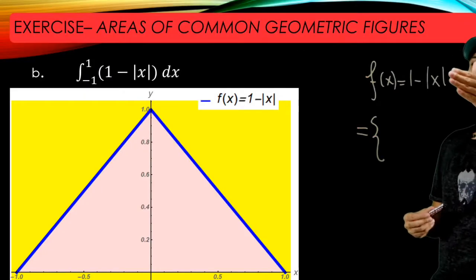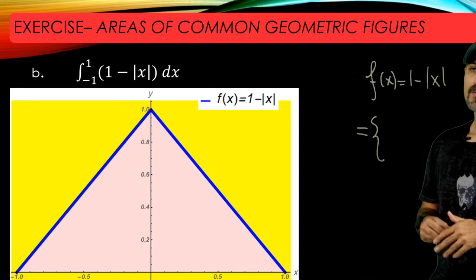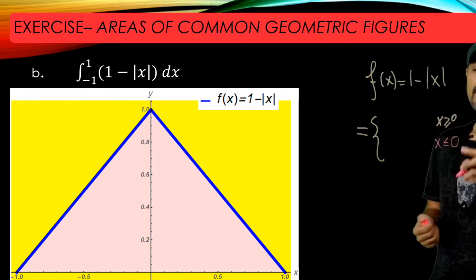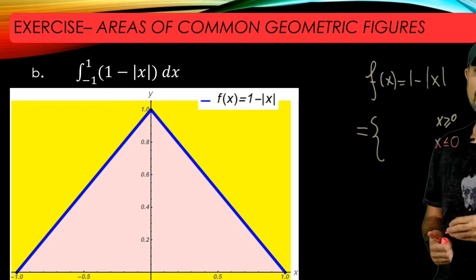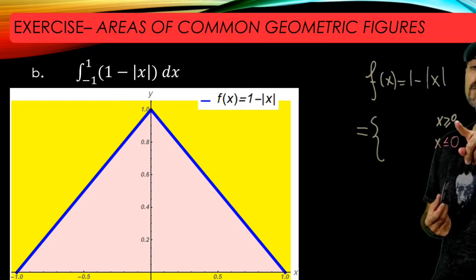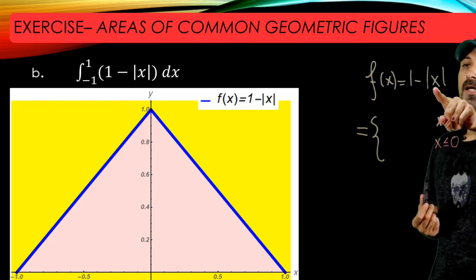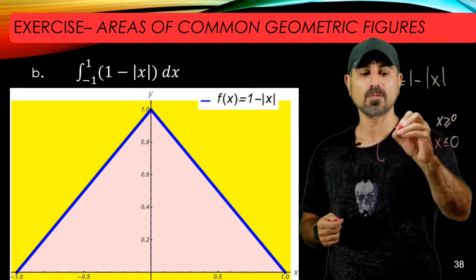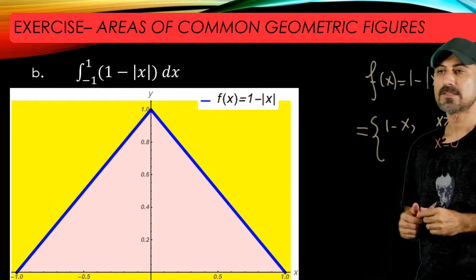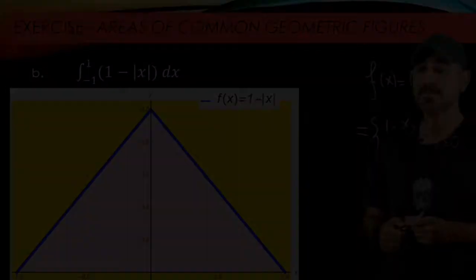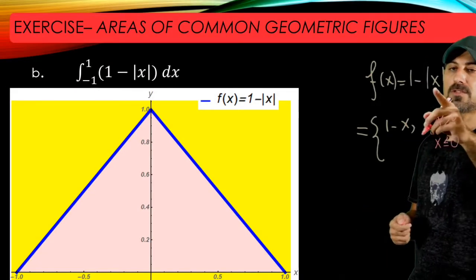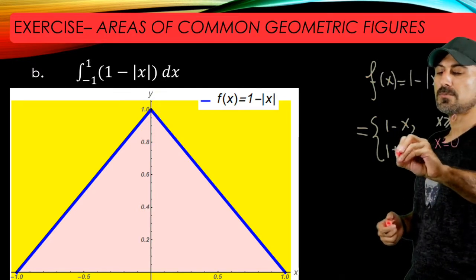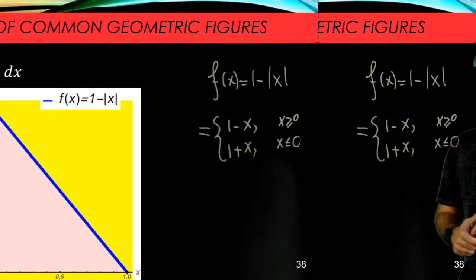Well, first of all, this is a piecewise function, and depending on the sign of x, you have two pieces here. One is when x is non-negative, and x is non-positive. When x is positive, the value of the absolute value of x is just x, so the function is one minus x. On the left-hand side of the y-axis, where x's are all negative, the absolute value function gives the value of negative x, but you have another negative sign here, so it should be one plus x.